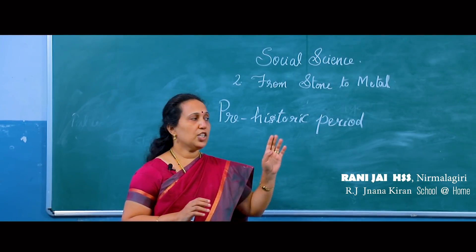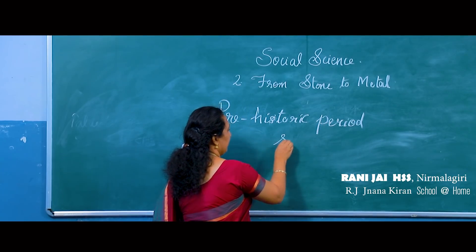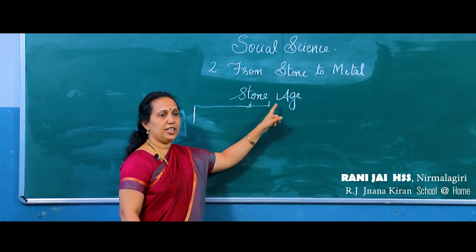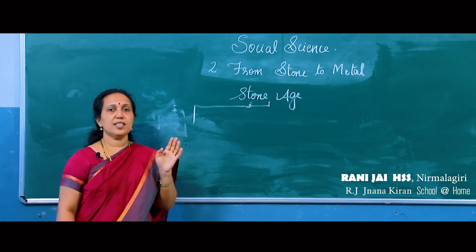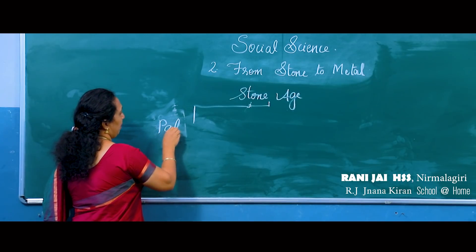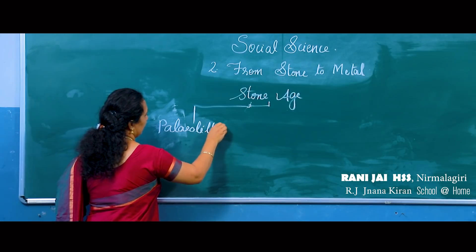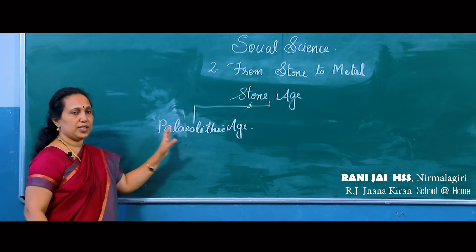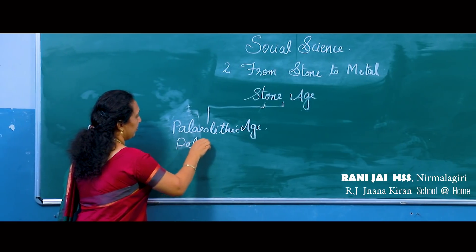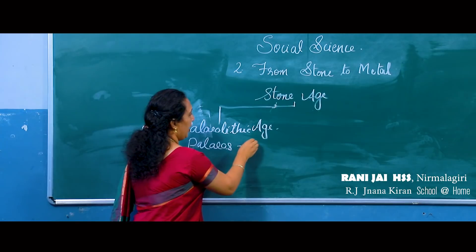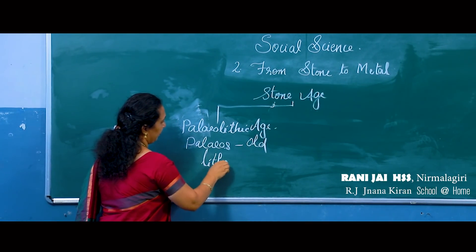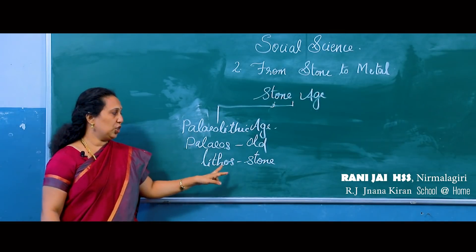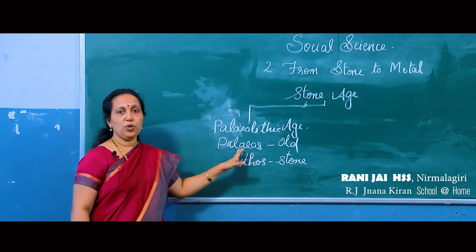Stone played a very important role in their life. This age is also known as the Stone Age. The prehistoric period is also known as the Stone Age. The Stone Age was divided into three: the Paleolithic Age, the Mesolithic Age, and the Neolithic Age. Paleolithic is derived from the Greek words 'paleos' and 'lithos.' Paleos means old and lithos means stone, so this age is also known as the Old Stone Age.